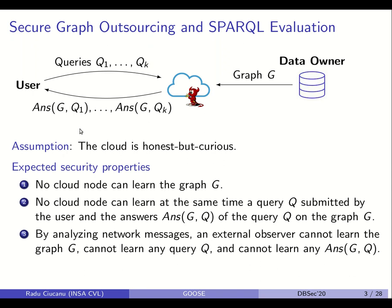Our assumption is that the cloud is honest but curious. This means that the cloud correctly does all the required computations, but the cloud can keep in memory all the data that it sees and can learn some data that it is not allowed to. The expected security properties are that no cloud node can learn the graph G outsourced by the data owner, no cloud node can learn at the same time a query and its answers, and by analyzing network messages, an external observer cannot learn the graph, a query, or the answers of a query on the graph.